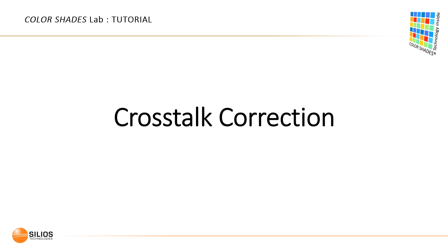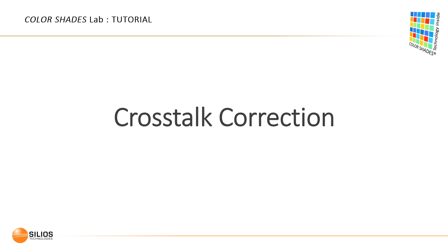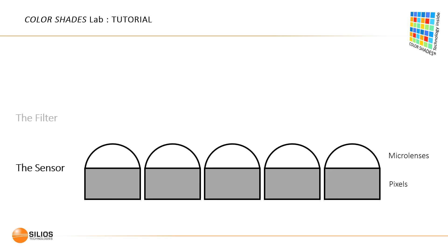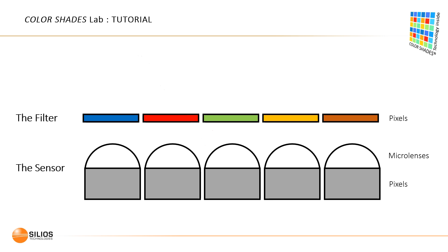Now, a few words about the crosstalk effect. In the CMS camera, like in every imaging system, crosstalk effect occurs. The crosstalk effect consists in the pollution of a given pixel by the neighbor pixels. In the case of multispectral cameras, such pollution can affect the quality of the spectral data.